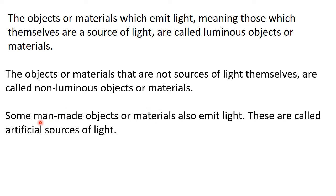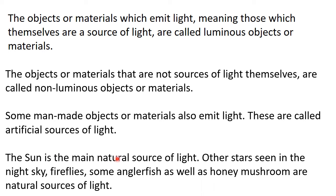Some man-made objects or materials emit light — for example, electric bulb and candle. Such sources are called artificial sources of light. Opposite to that, we have natural sources of light. The sun is the main natural source of light. Other natural sources include other stars, fireflies, some angler fish, and honey mushroom. These are also natural sources of light, but they are visible only during night time, because the bright sunlight makes it hard to see their light during the day.